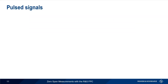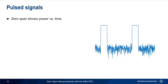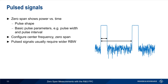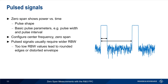The last zero-span application we're going to look at involves pulse signals. Specifically, we'll be using zero-span to view the pulse power versus time envelope, so we can examine both the pulse shape as well as determine basic pulse parameters such as pulse width and pulse interval. As always, we'll need to configure center frequency and set the span equal to zero. Because pulse signals tend to have wide spectral content, we'll most likely need a wider resolution bandwidth setting. Too small of a resolution bandwidth can lead to rounded edges or distorted pulse envelopes. And lastly, we'll also need to configure a trigger to freeze the pulse signal on our display.